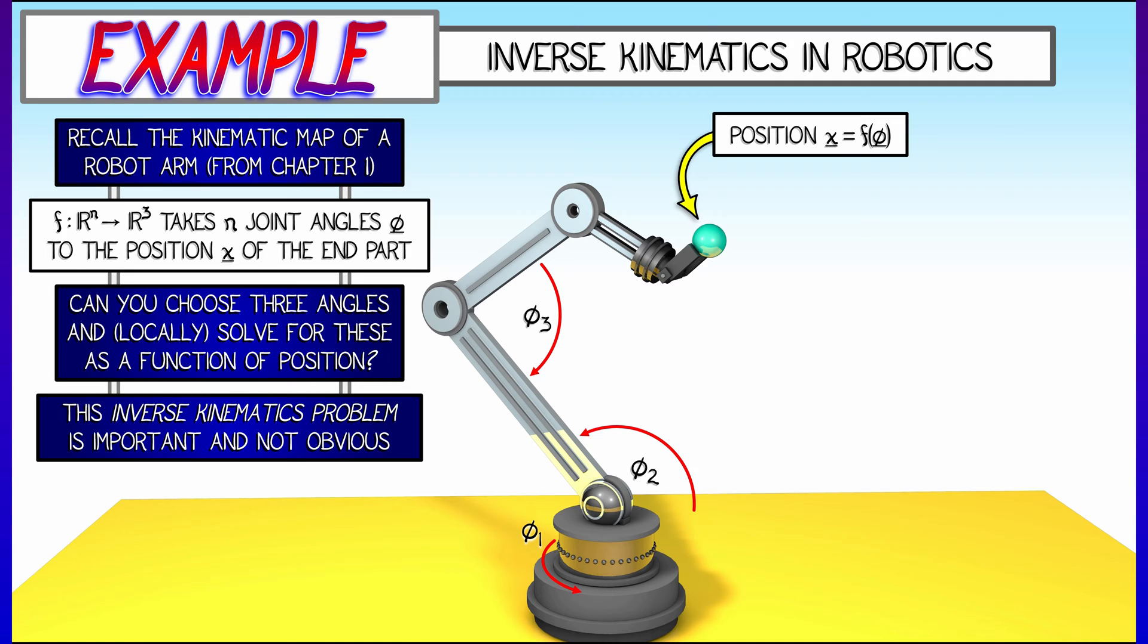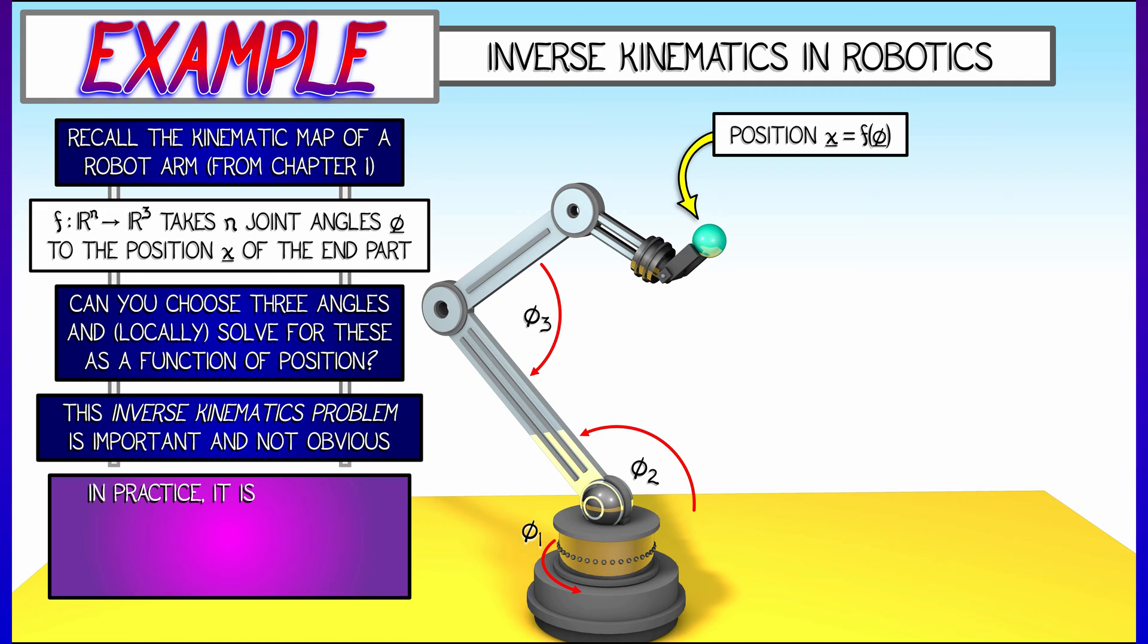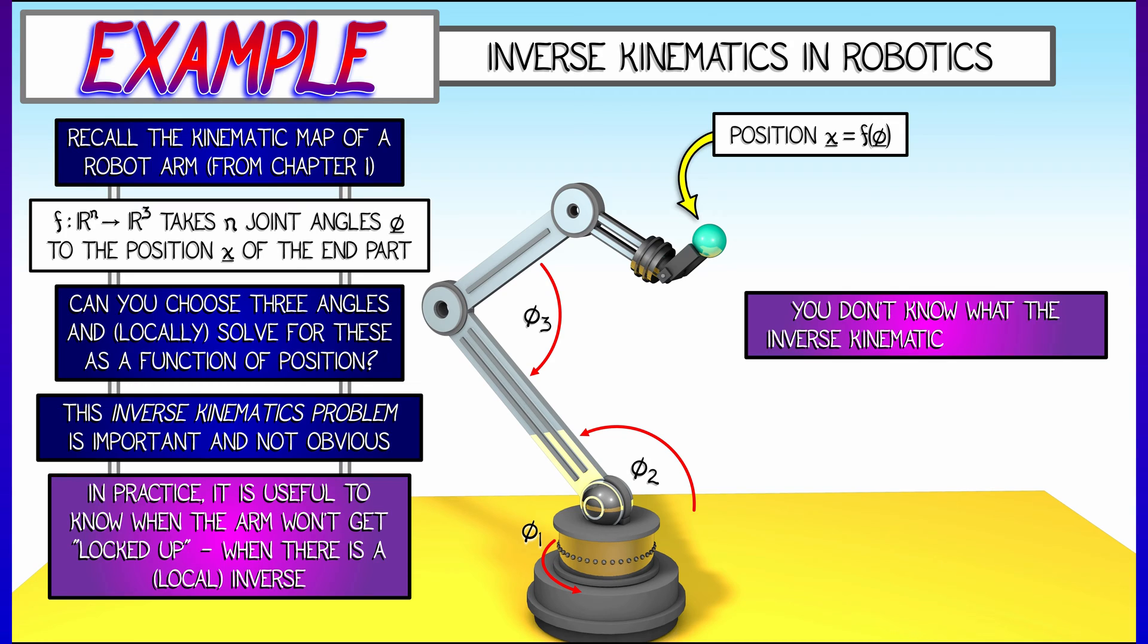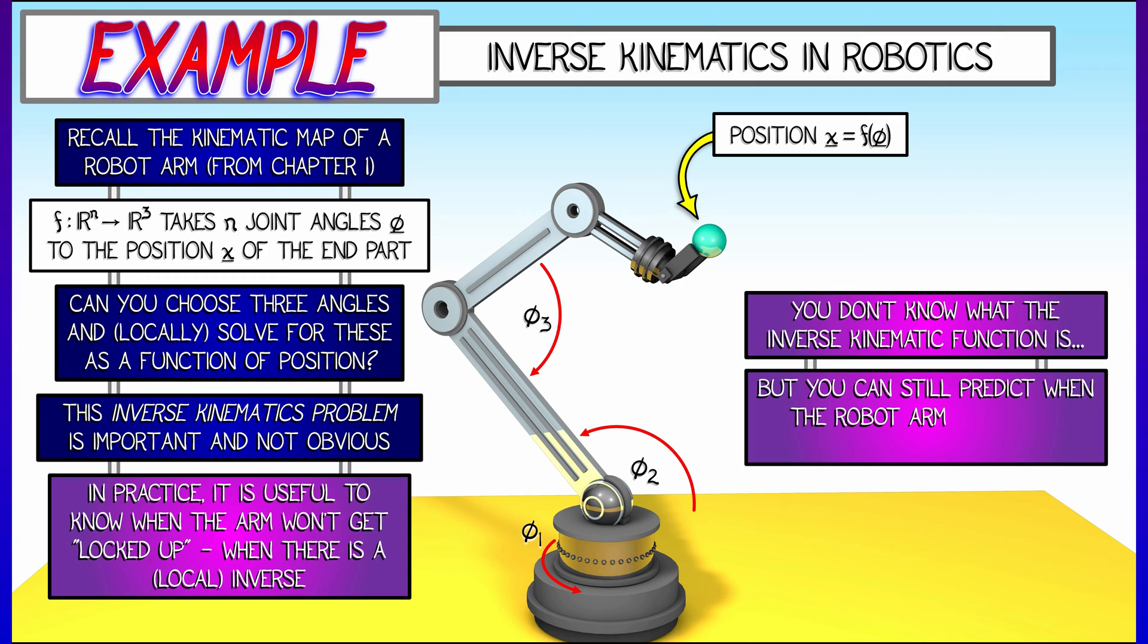Doing the forward kinematics is easy. That's just multiplying a bunch of rotation matrices together. So in practice, it's useful to know when you can't solve the inverse kinematics, when your arm gets locked up, but you don't know what that inverse kinematic function is.